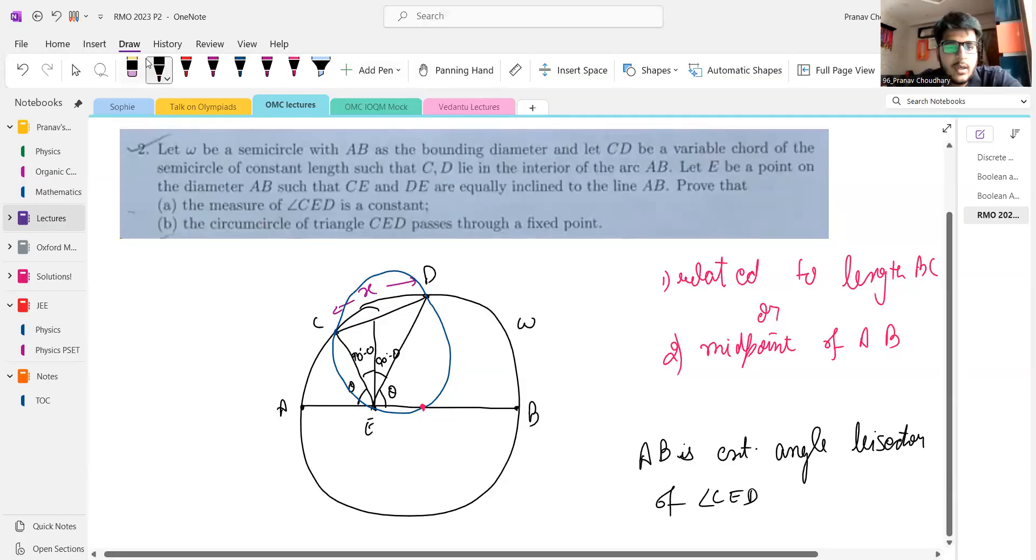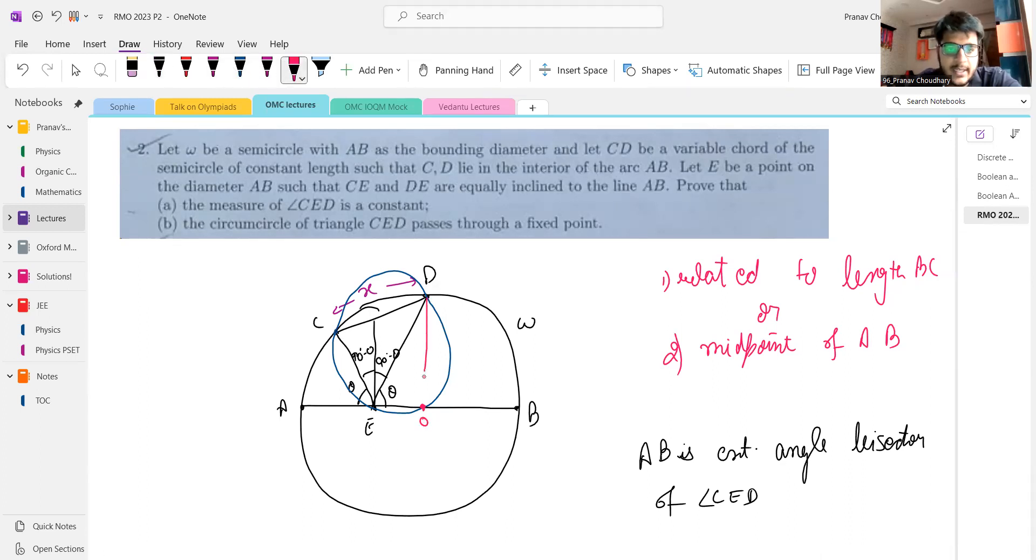And if we include this point O, then we see that this angle is constant. The motivation behind including O is you're given that the length CD is constant and you have to convert it to angle somehow, which means that this angle should be constant. So we have that angle COD is constant.